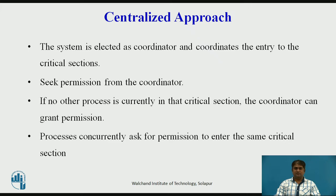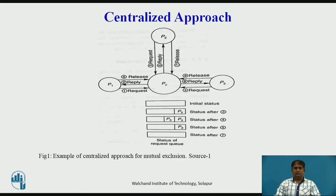After executing a critical section, when a process exits the critical section, it must notify the coordinator so that the coordinator can grant permission to another process, if any, that has also asked for permission to enter the same critical section. An algorithm for mutual exclusion using the centralized approach is shown here. Suppose there is a coordinator process PC and three other processes P1, P2, and P3 in the system. Requests are granted in first-come-first-served order, for which the coordinator maintains a request queue.